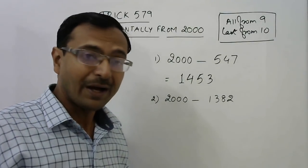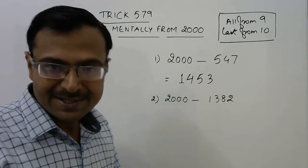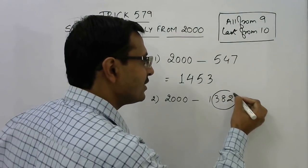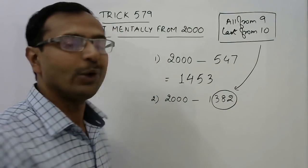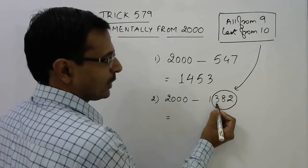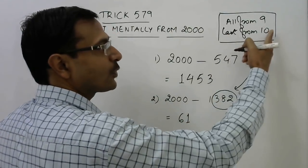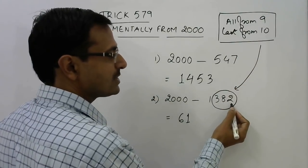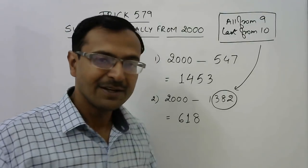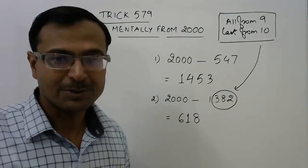Now when we have to subtract an amount more than 1000 — say 1382 — we again apply 'all from 9 and last from 10,' but this time only the last three digits are considered for the rule. So 9 minus 3 is 6, 9 minus 8 is 1, and 10 minus 2 is 8. That gives us 618 as the answer to 2000 minus 1382.